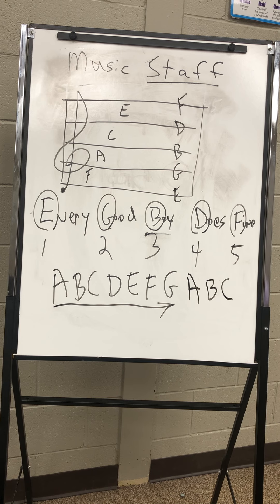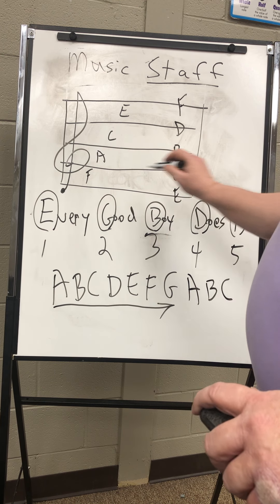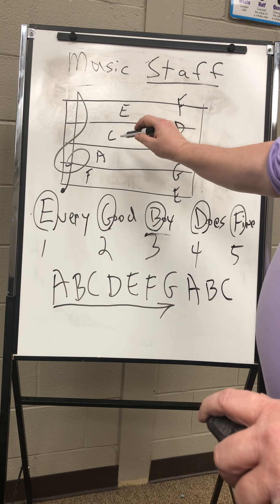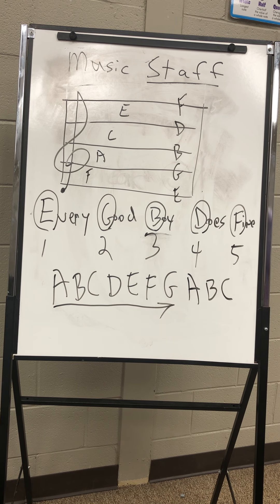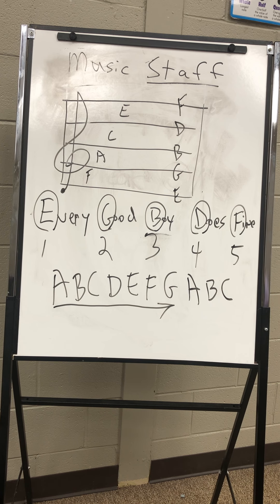If you notice, the treble clef starts with E on the bottom line, and going up you have E, F, G, A, B, C, D, E, F across the lines and spaces. Remember: our musical alphabet only has seven letters, and we have five lines and four spaces on the musical staff. In the treble clef, our phrase to remember the lines is Every Good Boy Does Fine, and our word to remember the spaces is FACE.